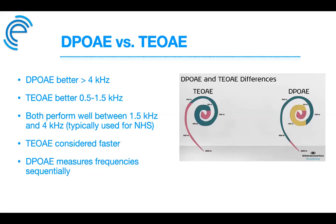Whether it's a TEOAE or DPOAE, a PASS result indicates good cochlear outer hair cell integrity, associated with behavioral hearing thresholds better than 25 to 30 dB HL.